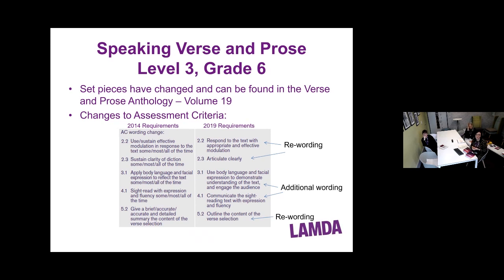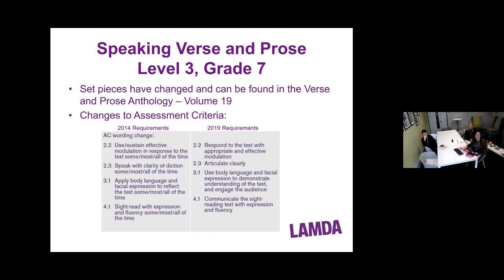Also for Grade 6, in the knowledge section at 5.2 there's a slight rewording: learners are now required to give an 'outline' of the content of their verse selection, rather than a 'brief accurate and detailed summary.' For Grade 7, similar changes — rewording of 2.2, 2.3 and 3.1, with the addition of demonstrating understanding of the text and engaging the audience. The rewording of 4.1 for sight reading also applies. The actual format of these exams has not changed at all.